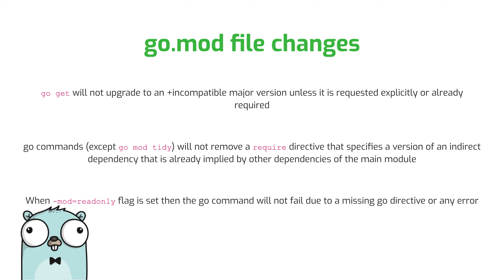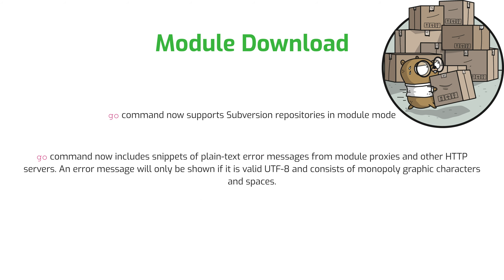For changes to the go.mod file itself: go get will not upgrade to a plus incompatible major version unless it's requested explicitly or already required. Go commands other than go mod tidy will not remove a require directive that specifies a version of an indirect dependency that's already implied by other dependencies of the main module. And when the -mod flag is set to readonly, the go command will not fail due to a missing go directive or any other error. For module downloads, the go command now supports Subversion repositories in module mode, and the go command now includes snippets of plain text error messages from module proxies and other HTTP servers. An error message will only be shown if it's valid UTF-8 and consists of Unicode graphic characters and spaces.